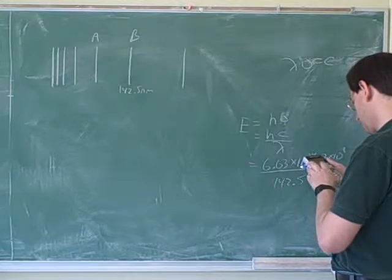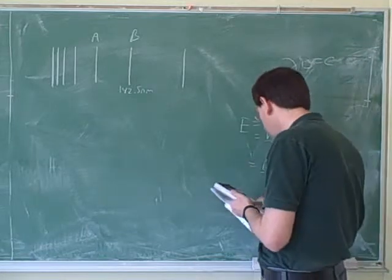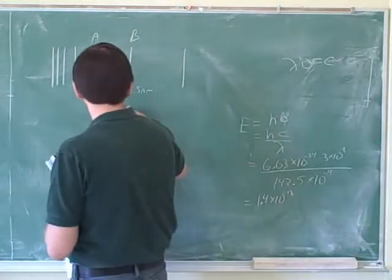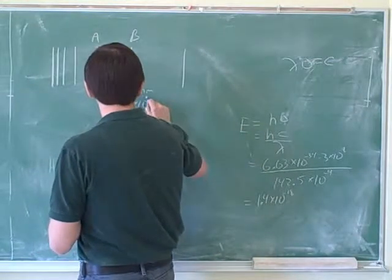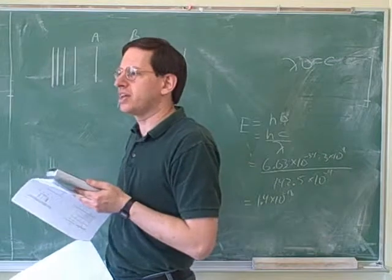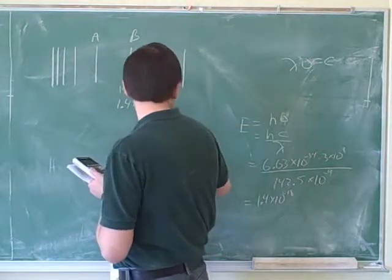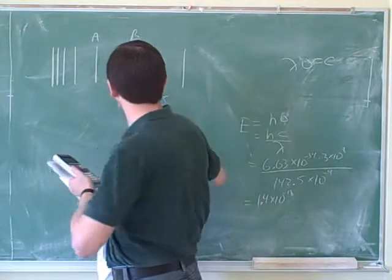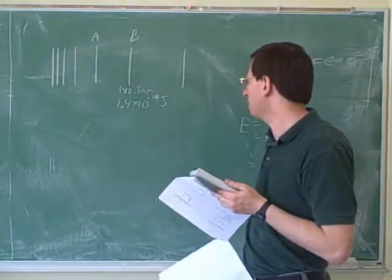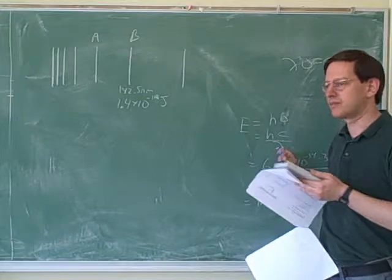I got 1.4 times 10 to the negative 18. What would be the units on that? Since we're using SI units, so we should get SI units out. So that would be joules. The only SI unit that's not a base unit is kilograms. All the other ones are not kilo. So this would be 1.4 times 10 to the negative 18. Does it make sense how we got this number? 10 to the negative 18 is what we got from this calculation. So this is an important calculation here. Did you see how we did this? Yeah. So this is an important formula for going between energy and lambda.